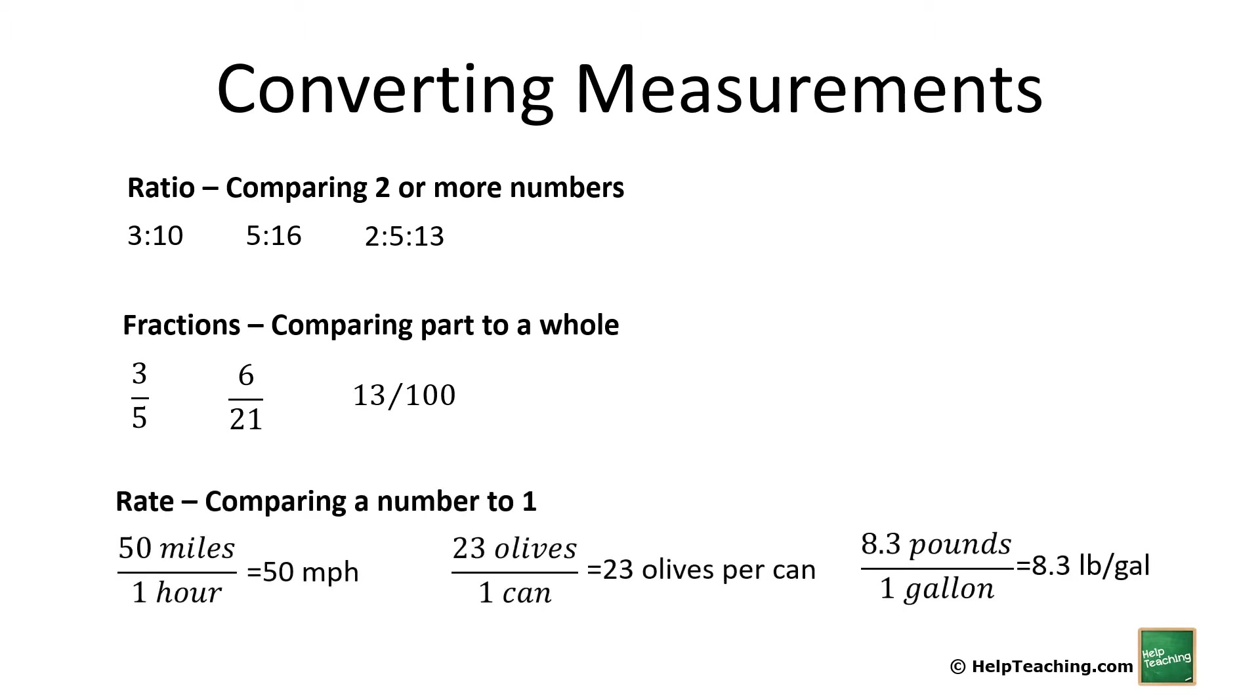Then we have rates. A rate is similar, but it compares a number to one, and it compares different units. So in this case, 50 miles per hour means you're traveling 50 miles per every one hour. 23 olives per can: 23 olives in one can. 8.3 pounds in a gallon. We say 8.3 pounds per gallon. This will be important as we're working at converting these.